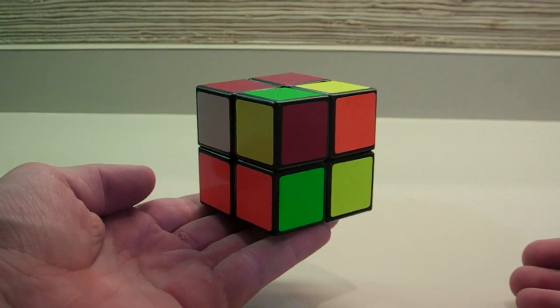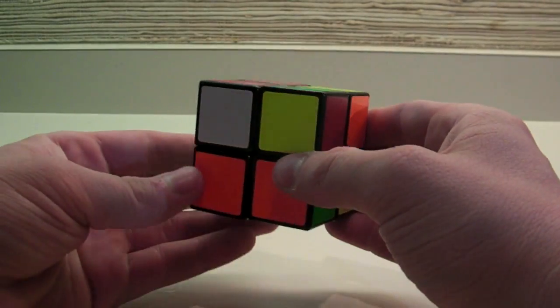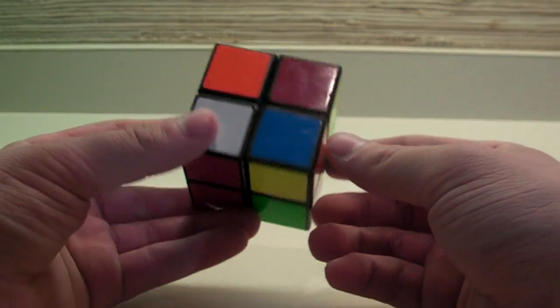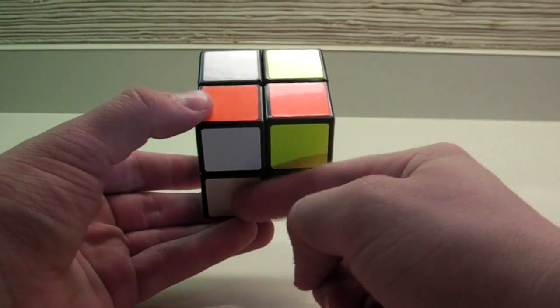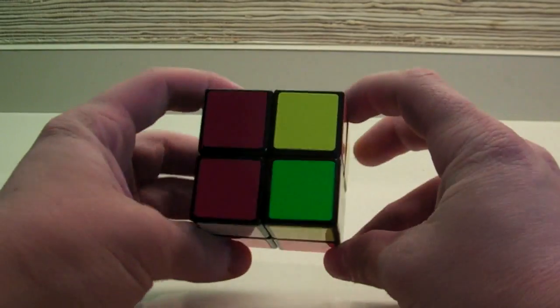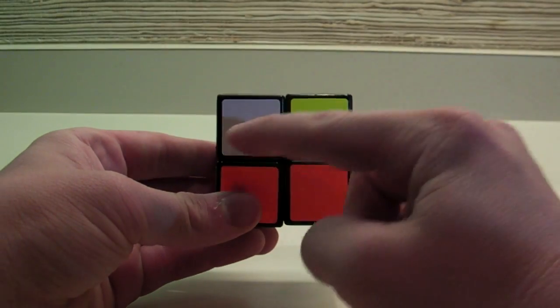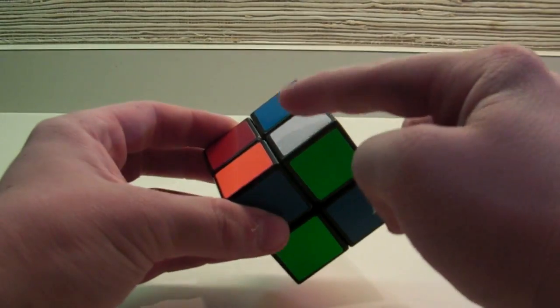First, in your 15 second inspection time, you analyze the cube and look for the easiest face to make. In this case, I'm going to choose white. So, you hold the two that are already paired together on the bottom, and you start inserting the rest of them. There is white here, and there is white here.